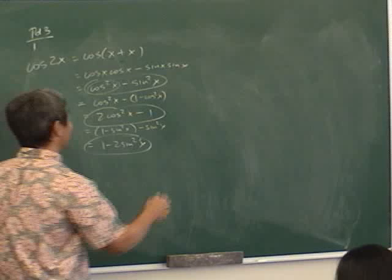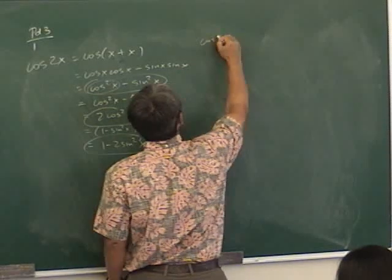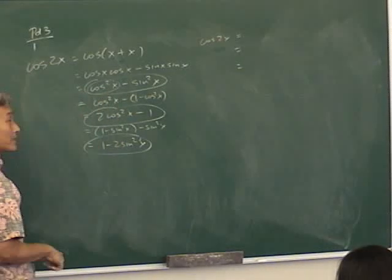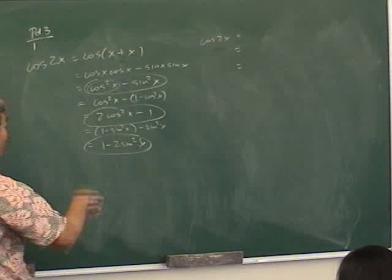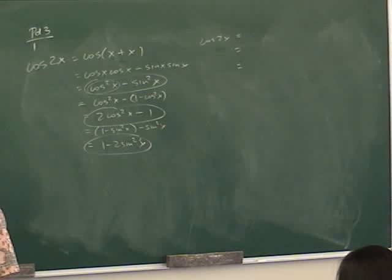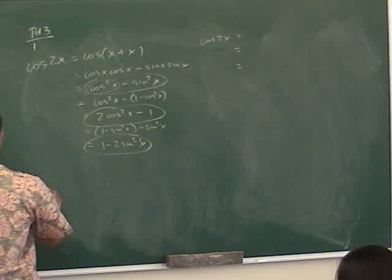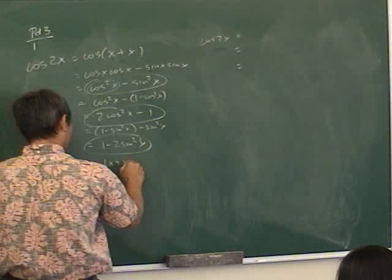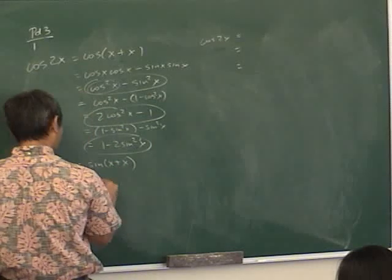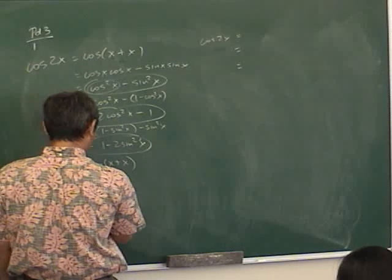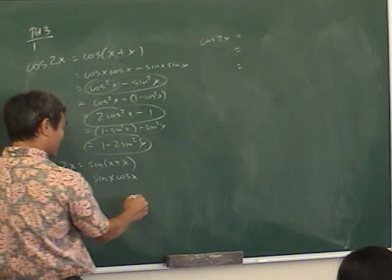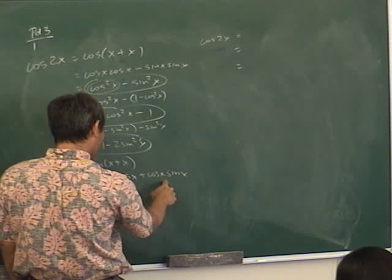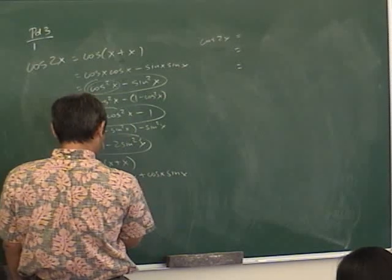On the speed quiz you'll see cosine(2x) = ___ = ___ = ___ — three blanks, three different forms. Can you write the same one for all three? Sure, but you'll get two wrong. For sine(2x): it's sine of (x+x), so using the sine addition identity — sine of the first times cosine of the second, plus cosine of the first times sine of the second — and since both angles are x, you get 2·sine x·cosine x.